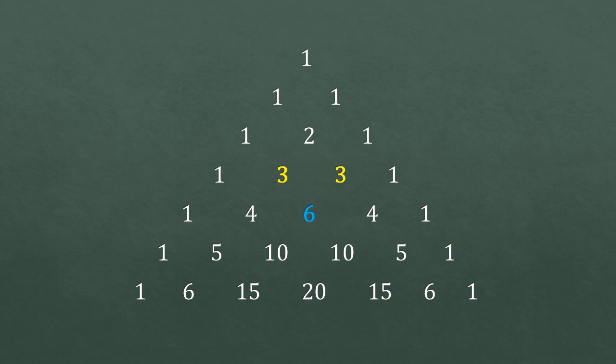Now you can try to build it by yourself. Start from the top, add two numbers, write the result just below it. And in this way you can build your own triangle. So we have a name for this triangle. We call this Pascal Triangle.